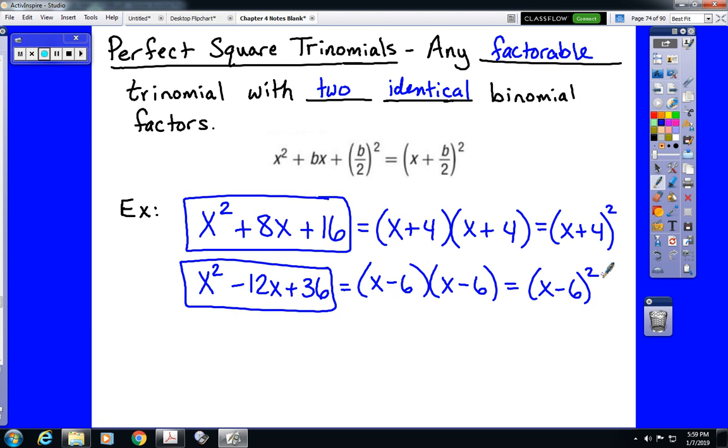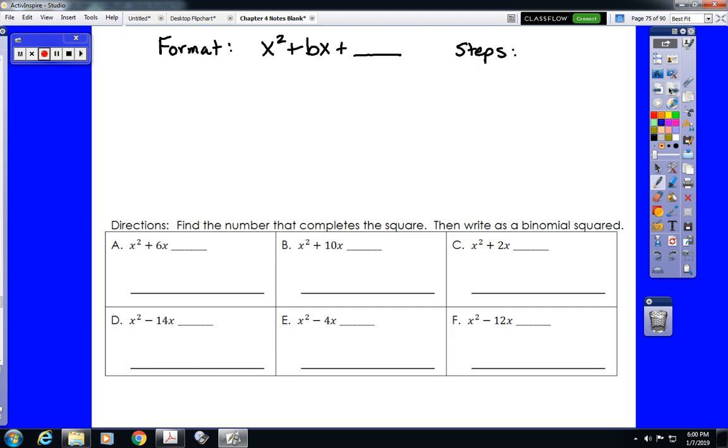So let's practice the last minor skill in this process, and that is actually completing a perfect square trinomial. So these problems are going to come in the format x squared plus bx equals something. And what we're supposed to do is divide b by 2, which will give us b over 2. And then we're supposed to square that value.